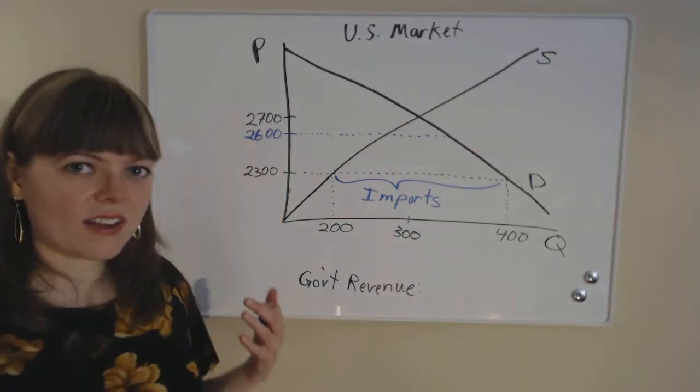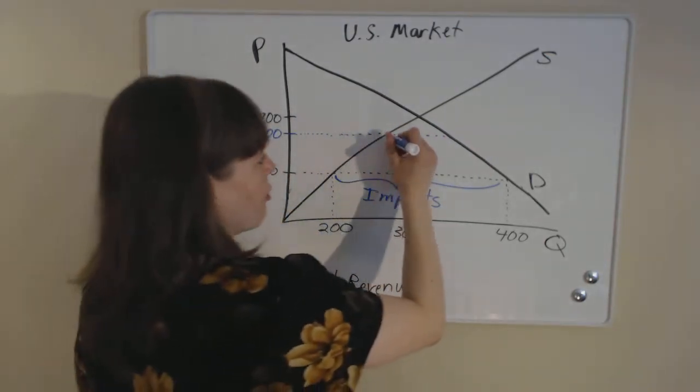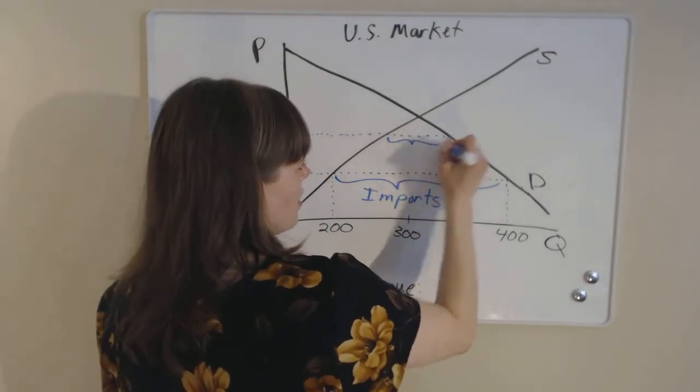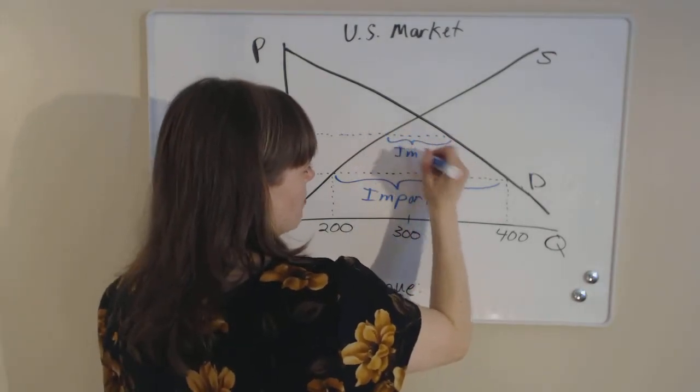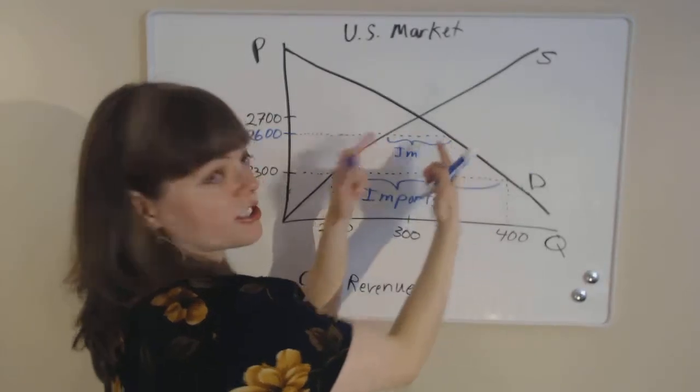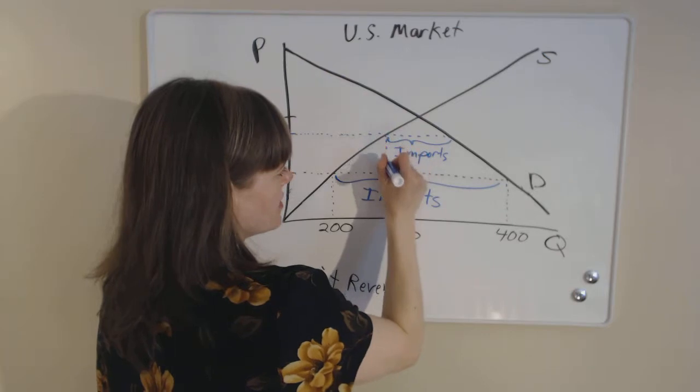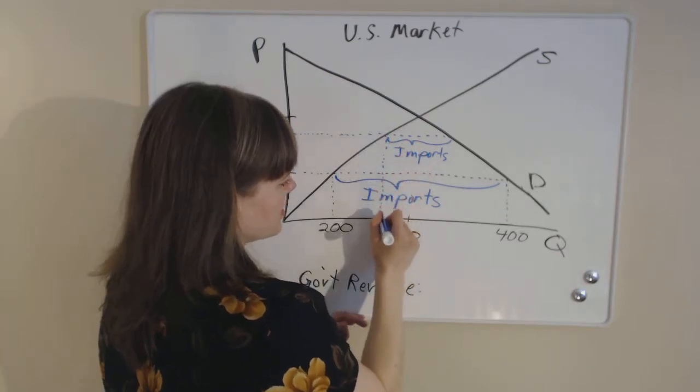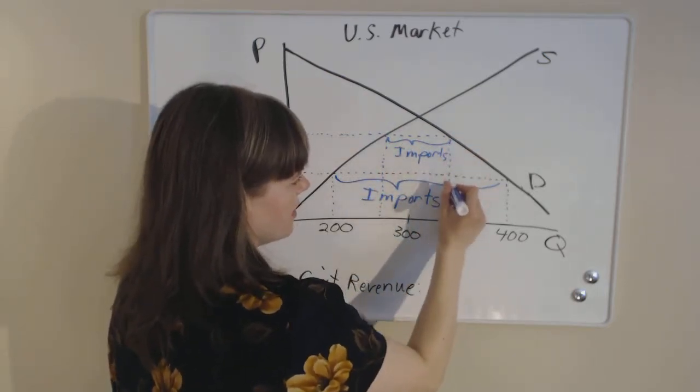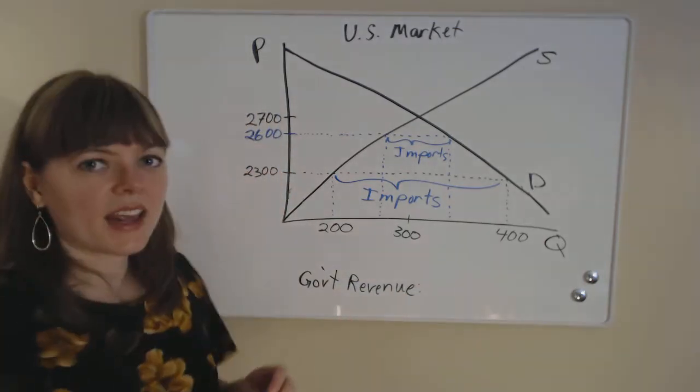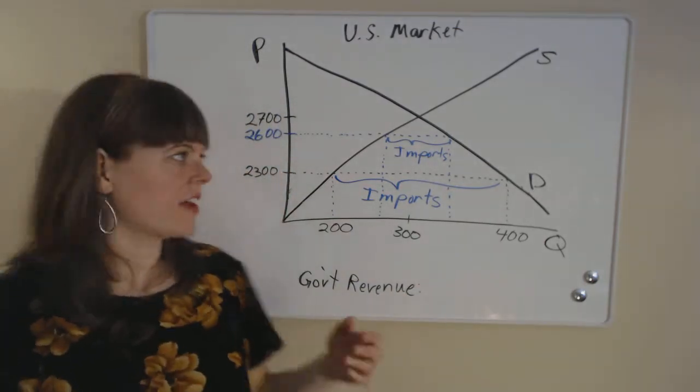And we can calculate the imports the same way we did before. So our imports will look the same as they did before, except now there's just going to be fewer imports. And how many exactly is this? Well, we're going to have to use our algebra skills to calculate that. And any algebraic method will work for this.